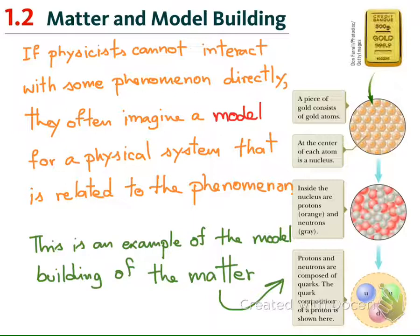We create the model, and the process is called model building. We test the model by comparing the calculation results from the model with the experiment. If they agree well, we say the model is likely to be correct. If not, we try to find what's wrong in the model or in the experimental results, and do the comparison again.